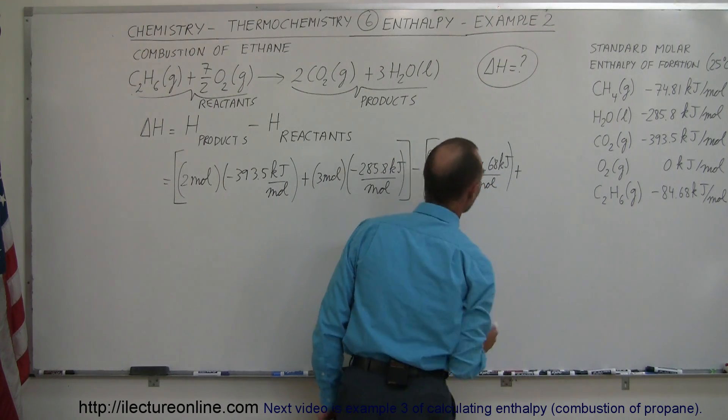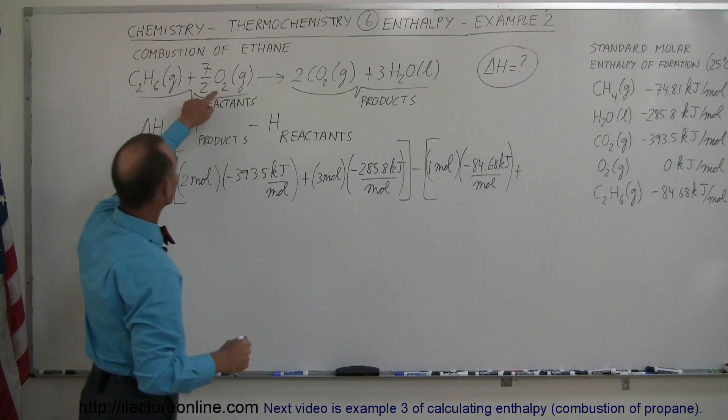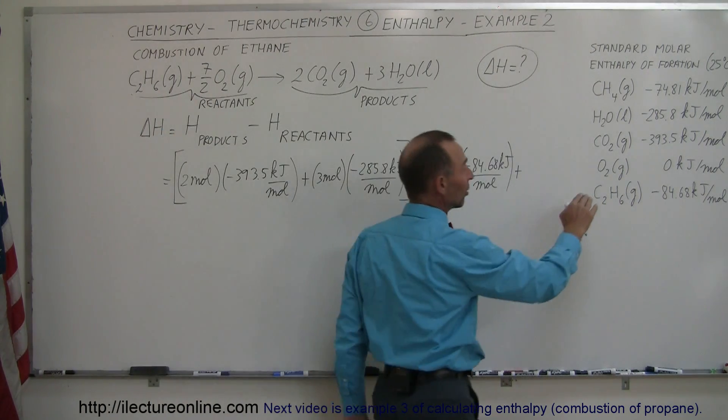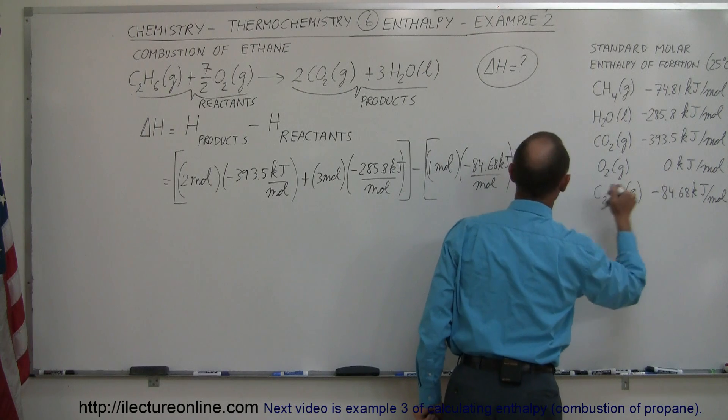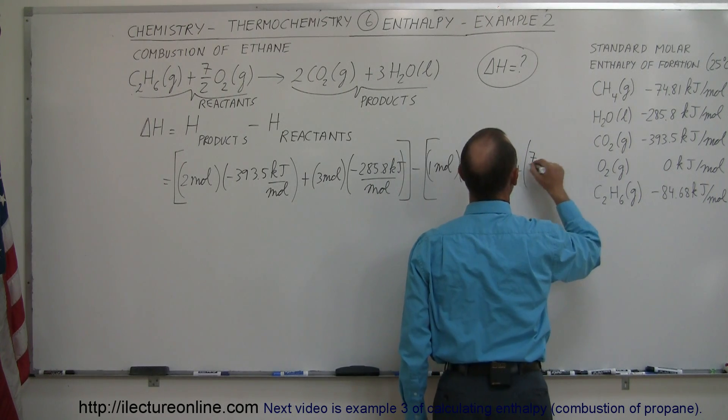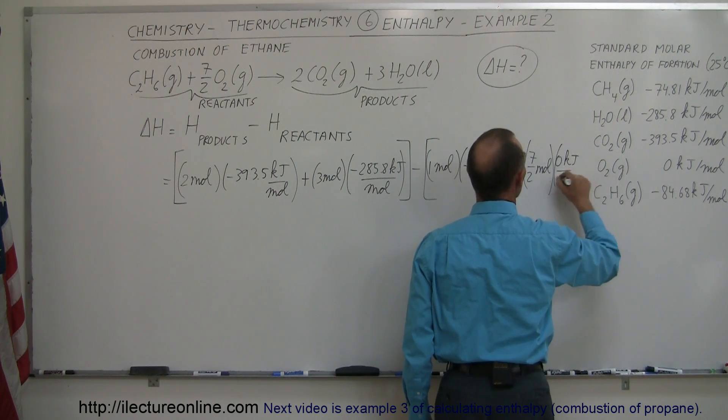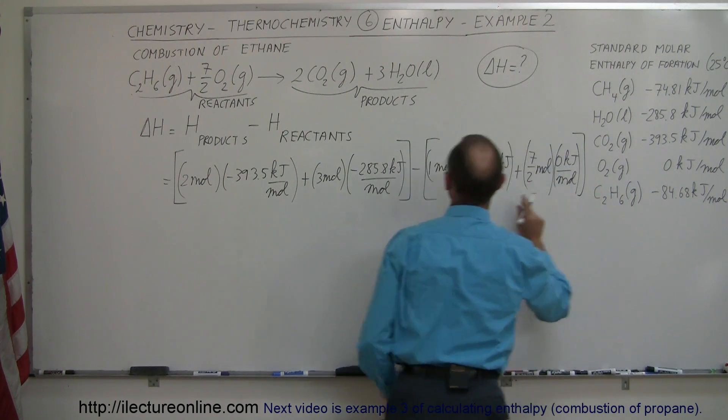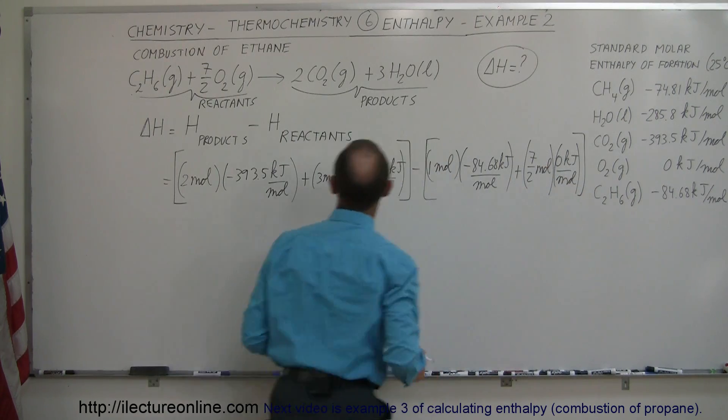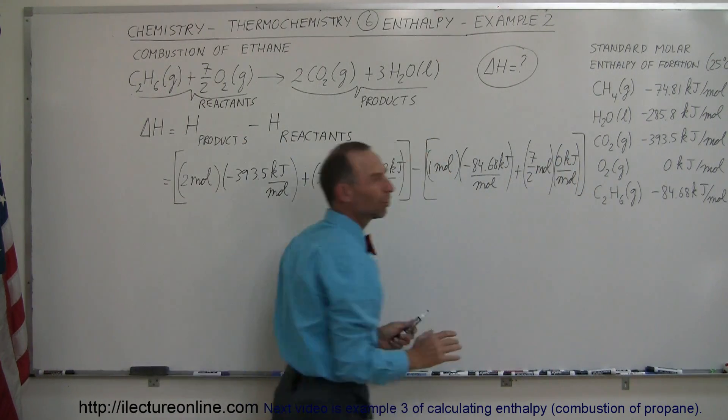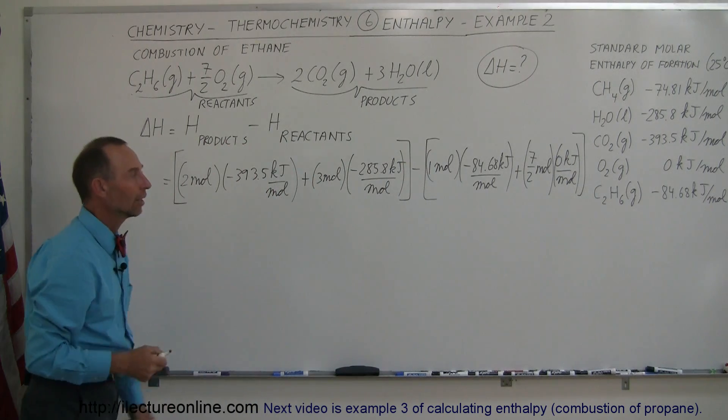Then we have to add to that the amount of enthalpy change for oxygen. Now notice, for oxygen gas, that's the lowest energy state, it's equal to 0 kJ. So that's plus 7.5 moles times 0 kJ per mole. I didn't have to write this because I knew it was zero, but just to illustrate, I added it there.